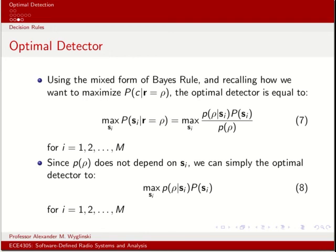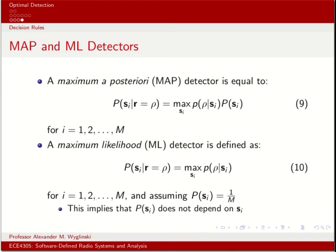From this optimal detector, we have one of two possible approaches. The first is the Maximum A Posteriori (MAP) detector, where we maximize p(ρ | S_i) · P(S_i) over all S_i. The second is the Maximum Likelihood (ML) detector, which is almost the same except that we assume all S_i are equally likely. In the next class, we'll see how, if the noise is Gaussian, this gives us a closed-form solution for what the optimal detector should look like at the receiver.